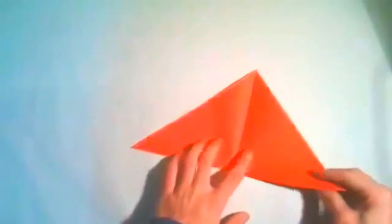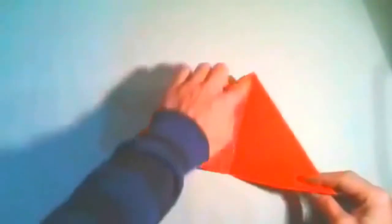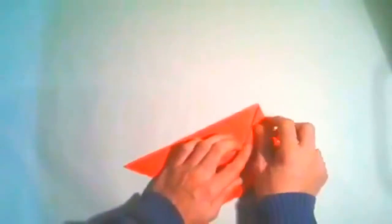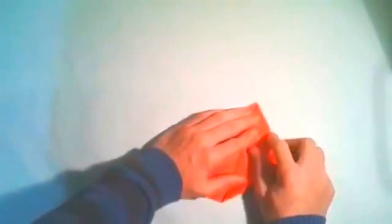Open it back up and you're going to take the bottom half and fold it right to the top of the tip. You're making essentially a diamond shape.